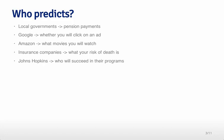Here are a couple of examples. Local governments might try to predict pension payments in the future so they know whether their revenue generation mechanisms have sufficient funds to cover those payments. Google might want to predict whether you're going to click on an ad to show you only the most likely ads and increase revenue. Amazon and Netflix want to predict what movie you might be interested in to keep you watching and increase revenue. Insurance companies employ large groups of actuaries and statisticians to predict your risk of various things including death, to set the right insurance premiums. And places like Johns Hopkins want to predict which students who've applied will be most likely to be successful.